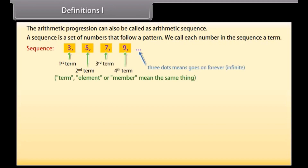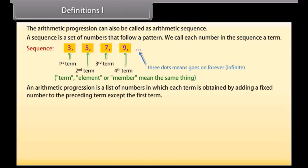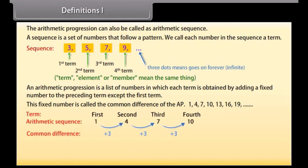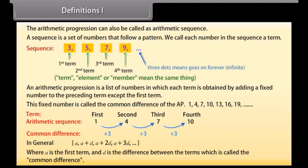An arithmetic progression is a list of numbers in which each term is obtained by adding a fixed number to the preceding term, except the first term. This fixed number is called the common difference of the AP. In general, we can write an arithmetic sequence as: A, A plus D, A plus 2D, A plus 3D, and so on — where A is the first term and D is the common difference.